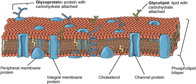Many types of specialized plasma membranes can separate a cell from its external environment, including apical, basolateral, presynaptic and postsynaptic ones, membranes of flagella, cilia, microvillus, filopodia and lamellipodia, the sarcolemma of muscle cells, as well as specialized myelin and dendritic spine membranes of neurons.